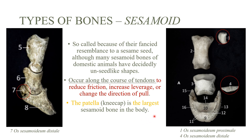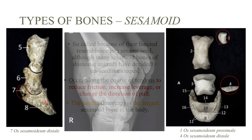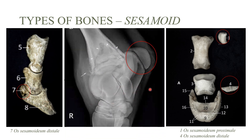The patella, or kneecap, is the largest sesamoid bone in the body. The human patella may seem large, but compare it to a horse or ox patella and it's quite different. Here we have the smaller sesamoid bones — the proximal one is closer to the body and the distal one is farther. From a lateral perspective you can see the distal sesamoid bone and the patella.